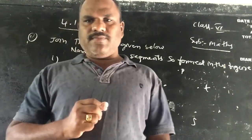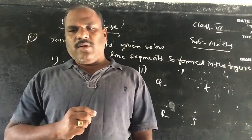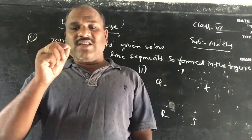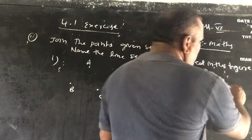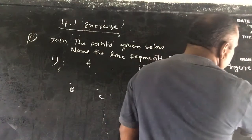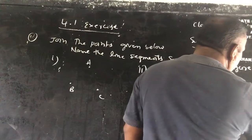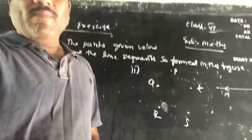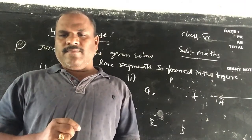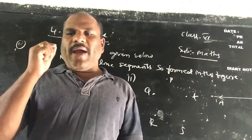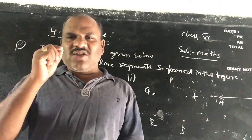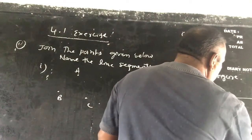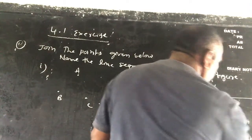Now, line segment. A line segment is formed by joining two points. It has a fixed length. For example, this is a line segment called AB. It is a part of a line. AB is a line segment formed by joining two endpoints, and it has a fixed length.